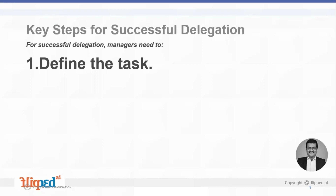Certain tasks cannot be delegated. For example, if a company wants to conduct an inquiry through the legal department and the only two qualified inquiry officers are not in station, delegating to an unqualified third person would make the task null and void. Therefore, we need to define the task and confirm whether it is suitable for delegation — that is very crucial.